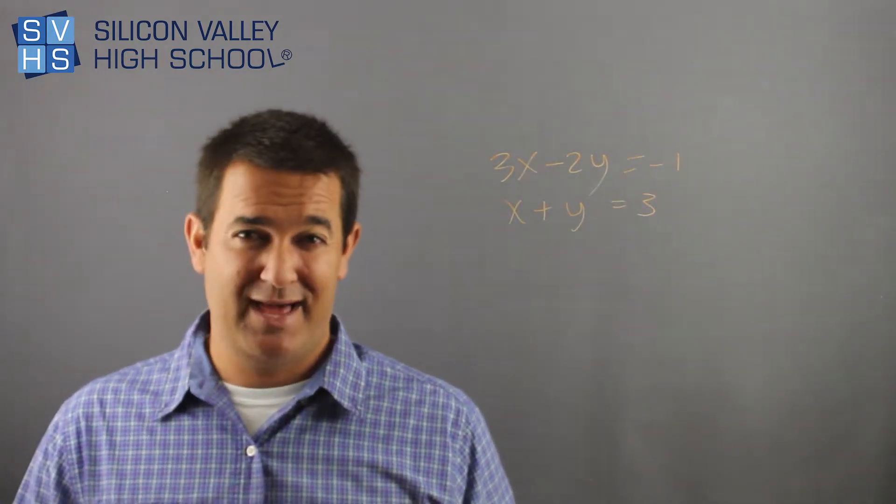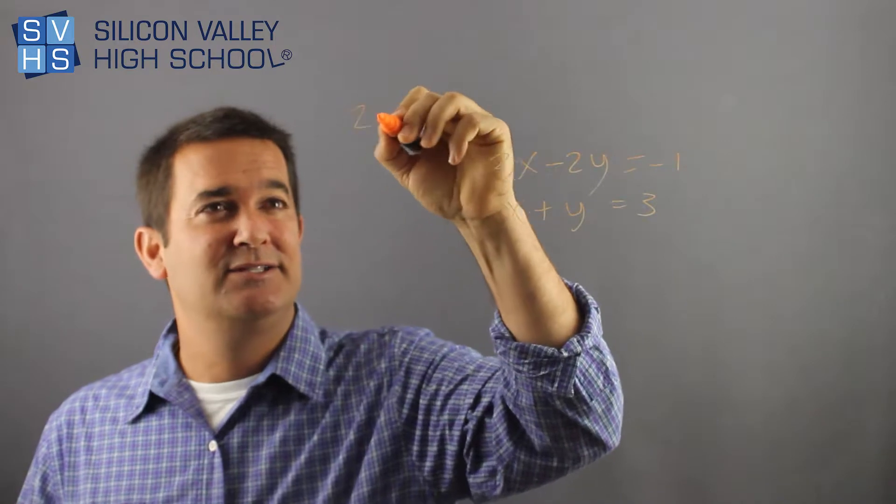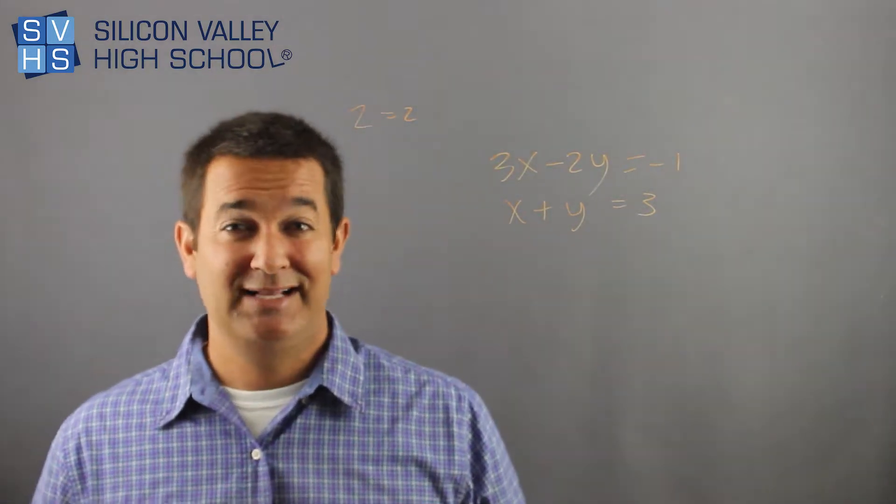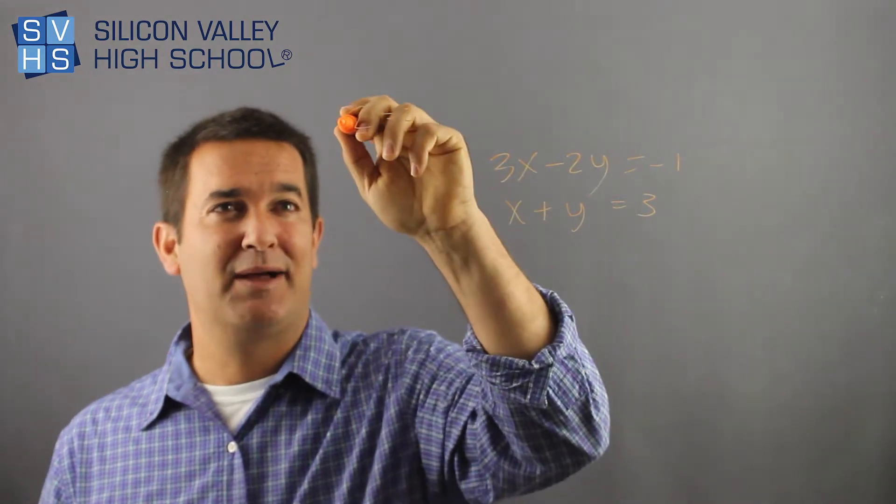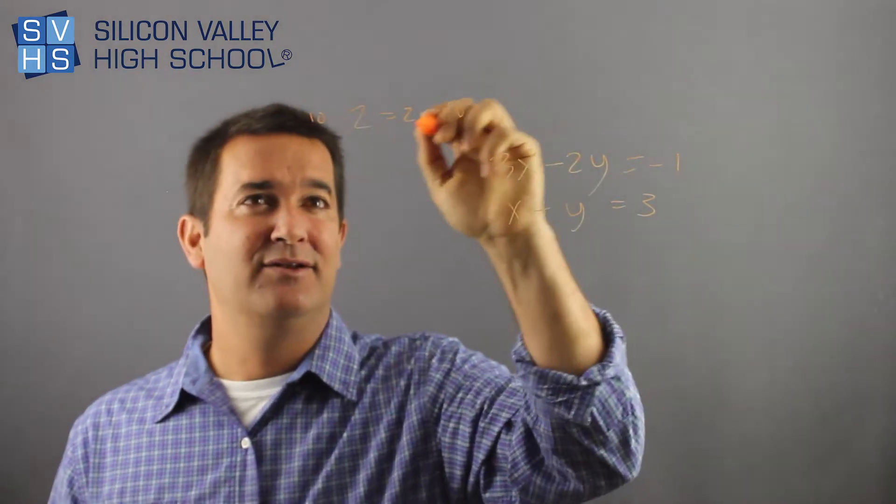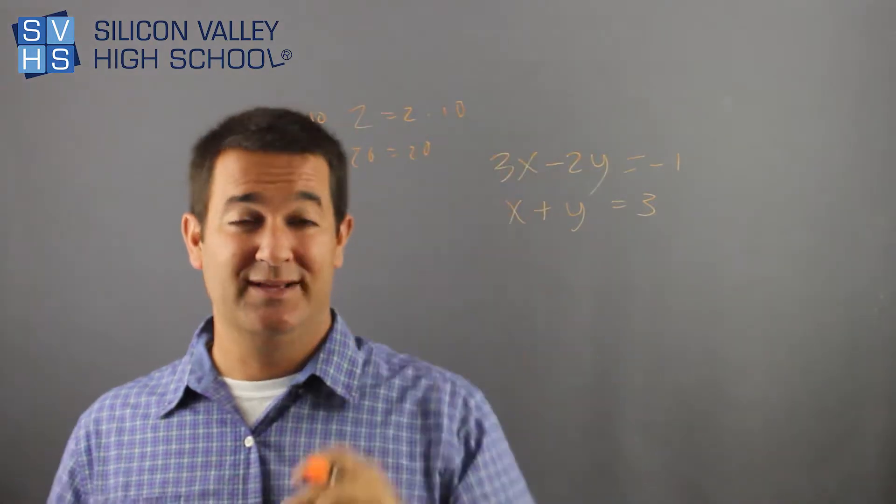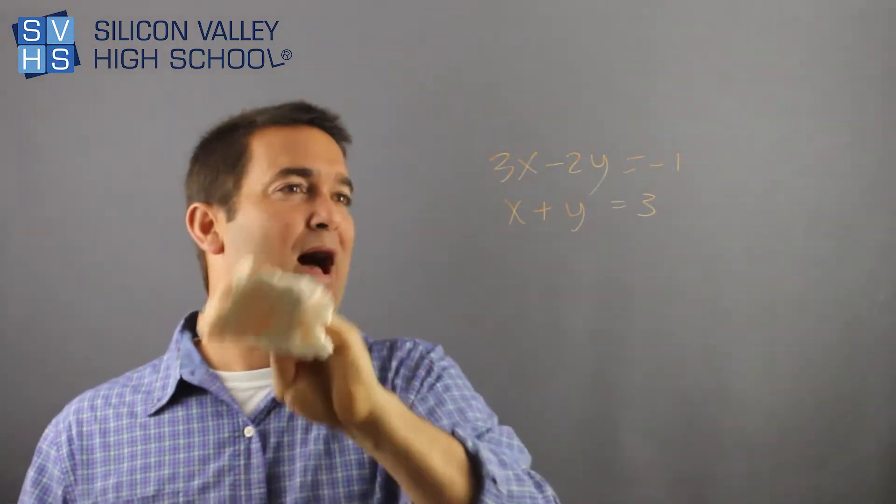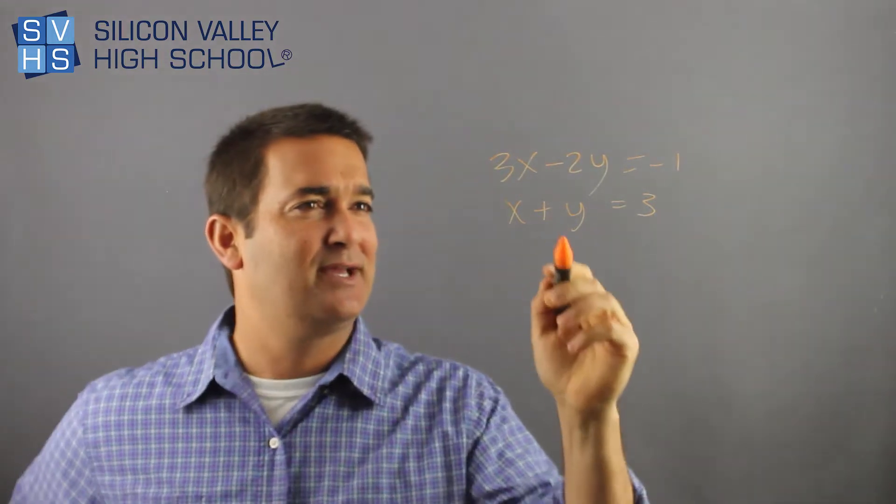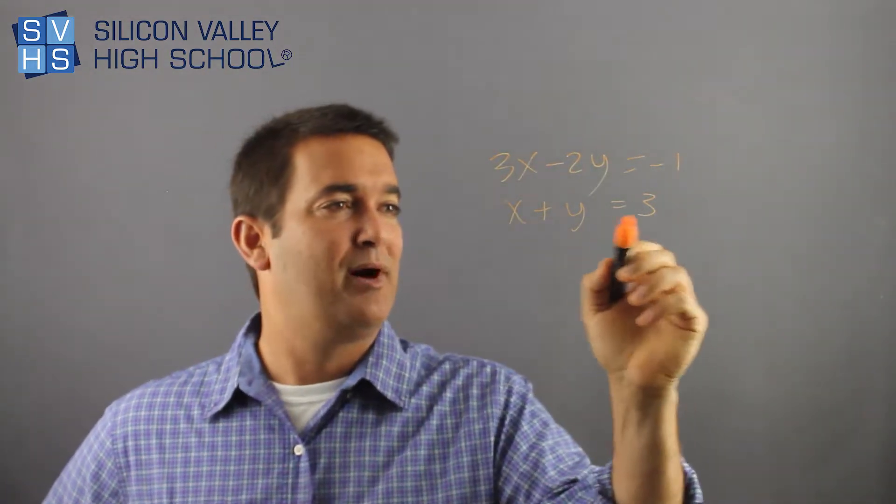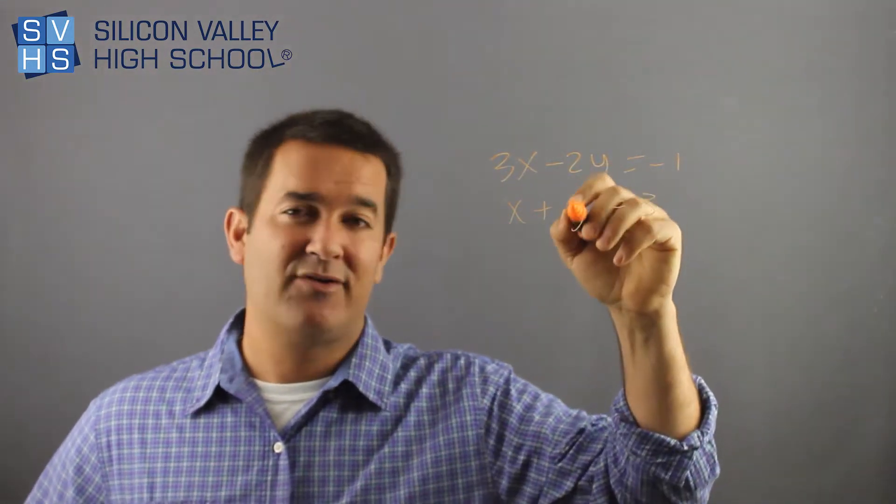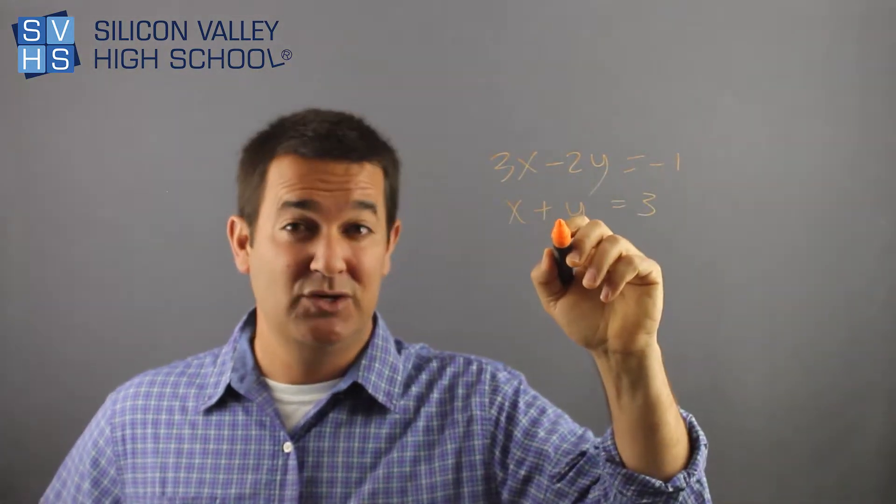And the reason that is mathematically legal is because do you agree that 2 equals 2? Whatever you do to both sides, as long as you do it to both sides, you're not breaking any laws. I can multiply both sides by 10. And sure enough, 20 still equals 20. So as long as you do it to both sides, you're not breaking the law. So I would take this, and I'm looking at it. I could multiply the whole bottom by negative 3, which would cancel my x's. 3, negative 3. Or this is kind of already set up. What if I multiply the whole bottom by 2?